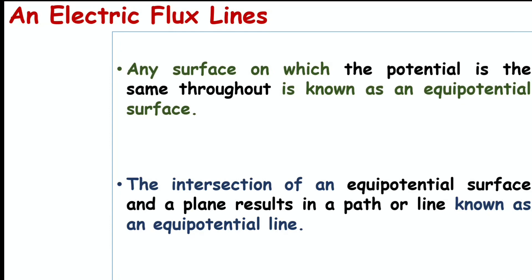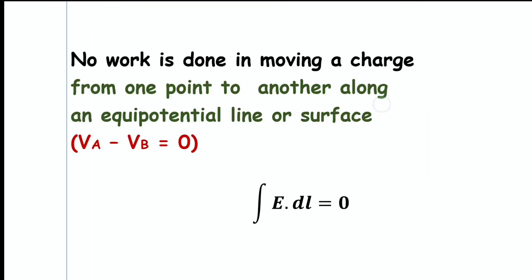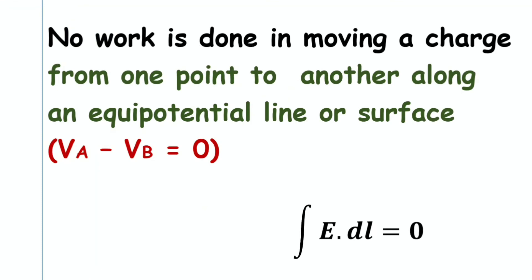Any surface on which the potential is the same throughout is known as an equipotential surface. The intersection of an equipotential surface and a plane results in an equipotential line. Keep in mind that no work is done in moving a charge from one point to another along an equipotential surface or line — that is, Va − Vb = 0, and therefore the line integral ∮ E · dl = 0.